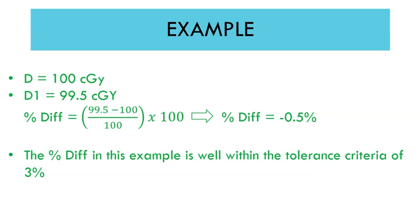Here's an example. Let's say the baseline dose was 100 centigrade, and today's dose D1 is 99.5 centigrade. Percentage difference using the formula is minus 0.5%. Since the percentage is less than tolerance, this machine is good for the day.